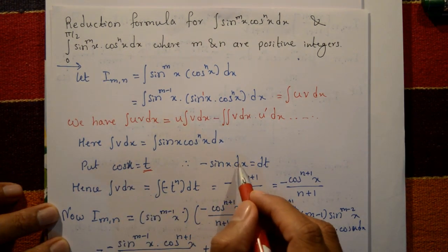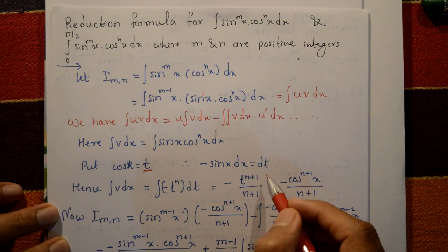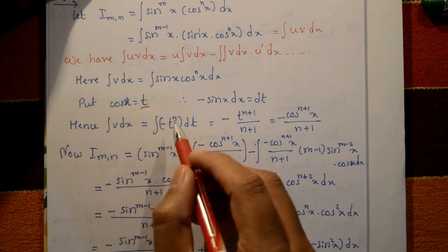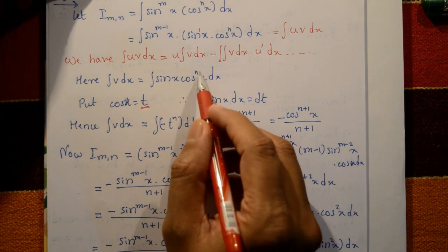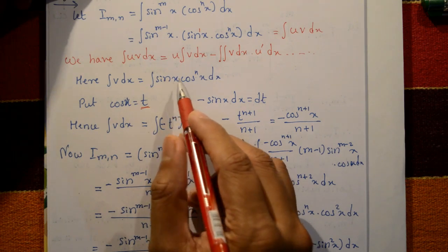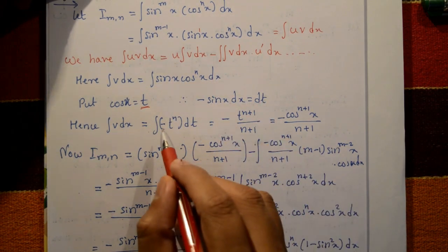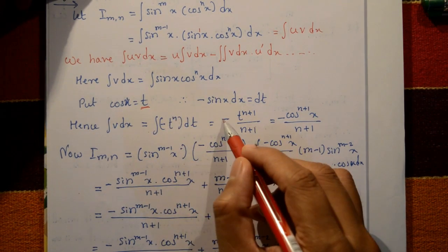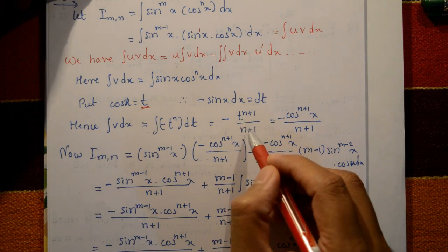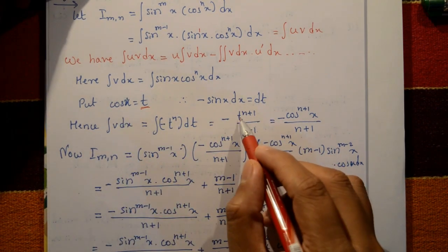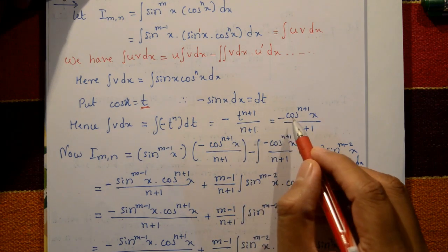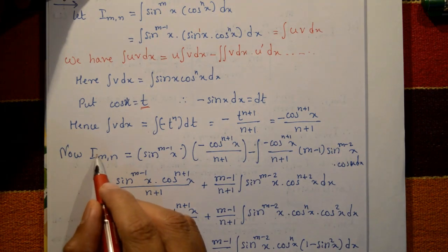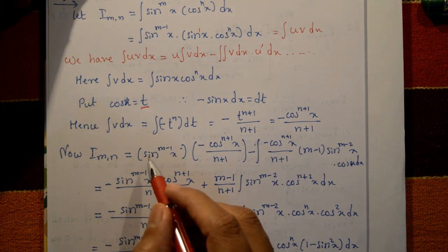Differentiating cos x = t gives −sin(x) dx = dt. So ∫sin(x)·cos^n(x) dx = ∫t^n·(−dt) = −t^(n+1)/(n+1), which means ∫φ dx = −cos^(n+1)(x)/(n+1).